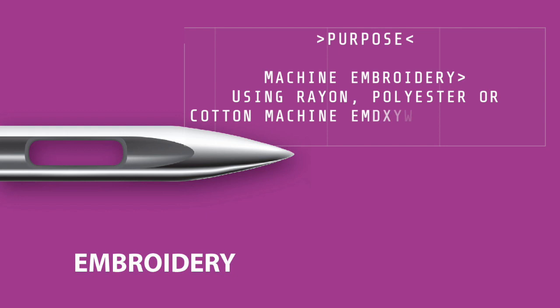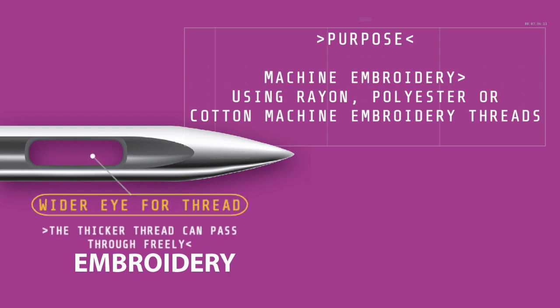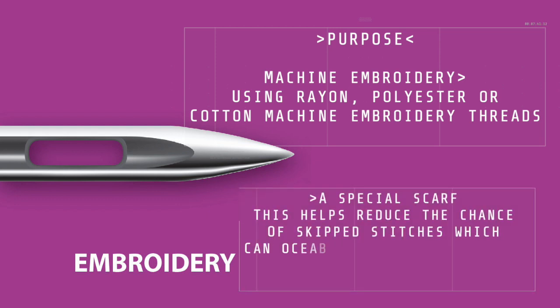The embroidery needle is specially designed for machine embroidery using rayon, polyester or cotton machine embroidery threads. It features a wider hole to allow thread to pass through freely, as the needle goes up and down many times very quickly. It also has a pontoon scarf with an oversized bump to reduce the chance of skipped stitches, which can occur when fabric flexes rapidly with the fast-moving needle.